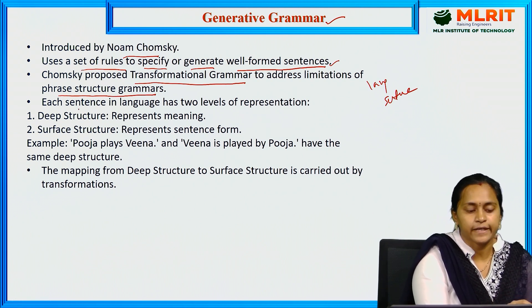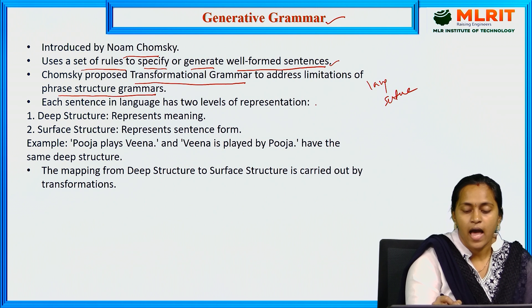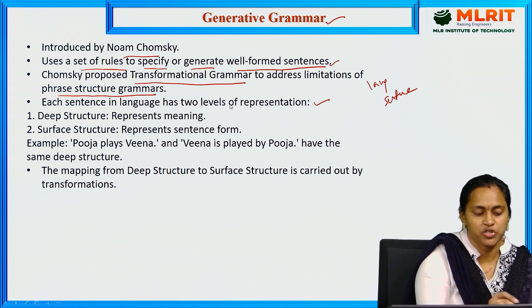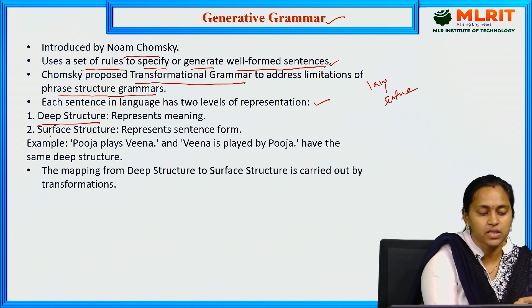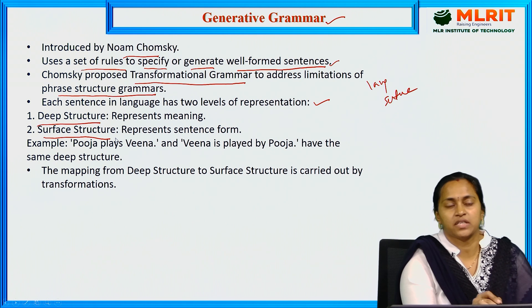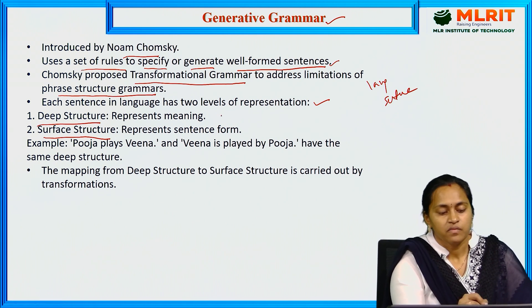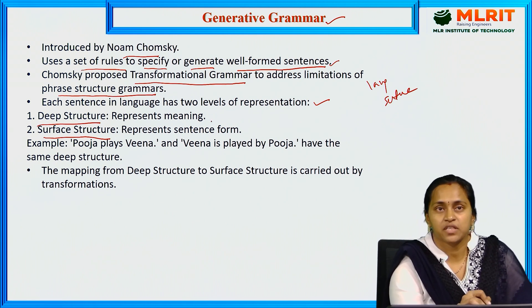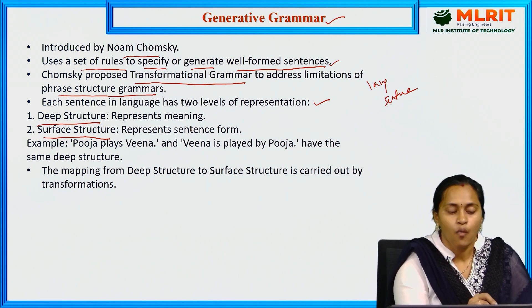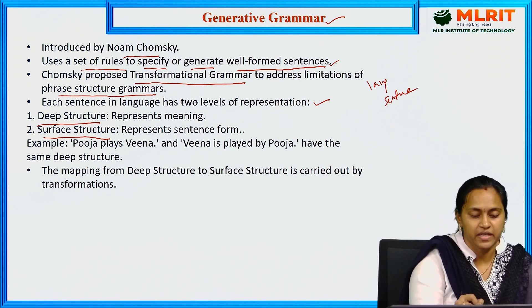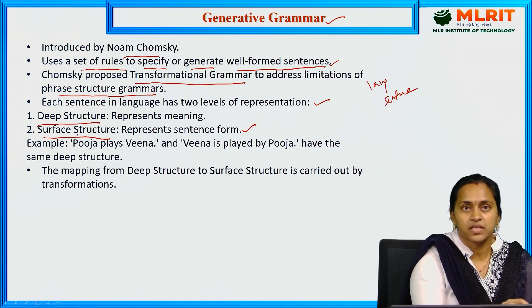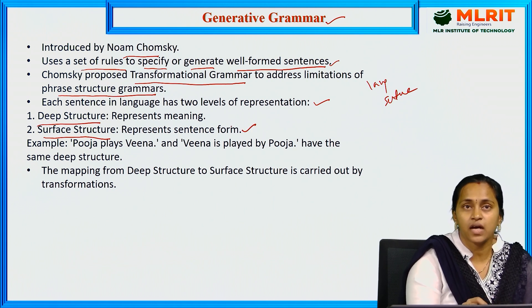Each sentence in a language has two levels of representation: deep structure and surface structure. Deep structure represents the overall meaning of the sentence, while surface structure represents the sentence form.